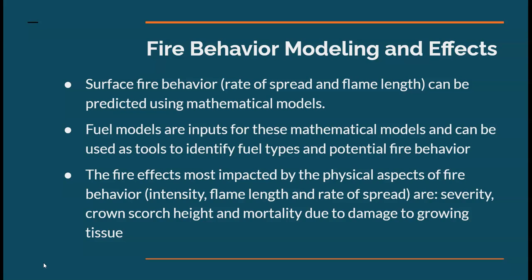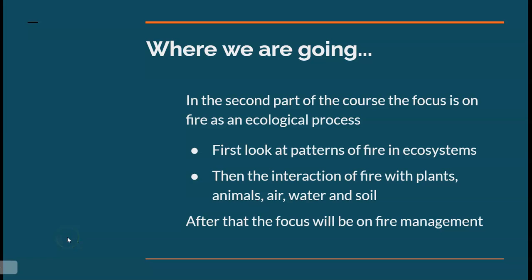We also talked about fire effects — those most impacted by the physical aspects of fire, specifically intensity, flame length, and rate of spread. Those effects are severity, crown scorch height, and mortality. Where we're headed now is the second part of the course, where we're going to focus on fire as an ecological process. First we'll look at the patterns of fires in ecosystems, and then the interaction of fire with plants, animals, air, and water — showing how plants and animals have adapted to fire. These are more indirect impacts from fire behavior than the physical effects we looked at just before the break.